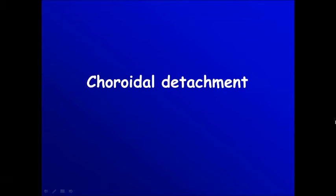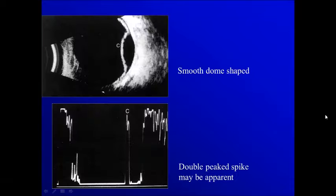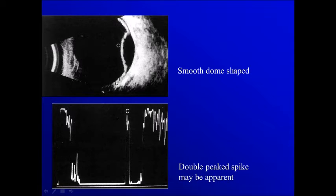In this part, I want to cover the subject of choroidal detachment. Choroidal detachment usually appears as a smooth dome-shaped area. You can follow it here — continuous with the choroid on contact with the wall. This is the normal area, but here it becomes detached with clear fluid underneath.